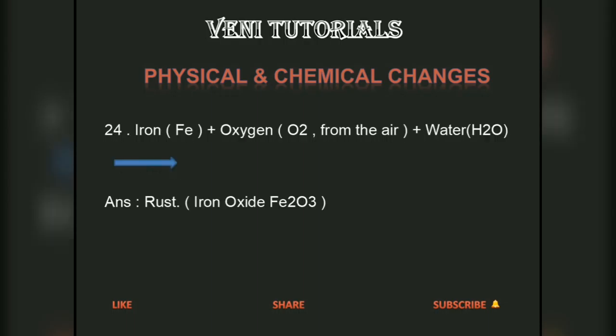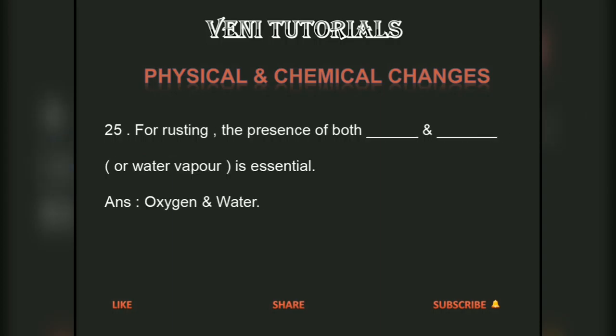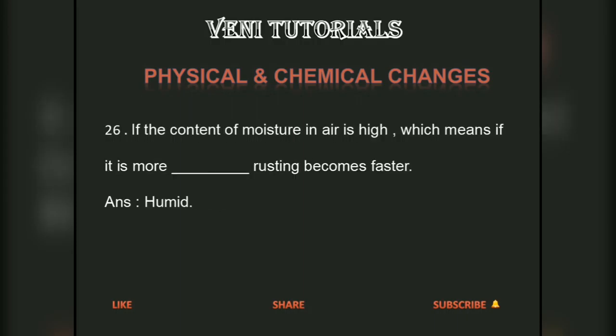Iron + oxygen + water gives rise to rust — iron oxide, Fe₂O₃. For rusting, the presence of both oxygen and water is essential. If the moisture content in air is high — that is, if it is more humid — rusting becomes faster.